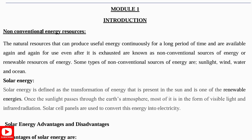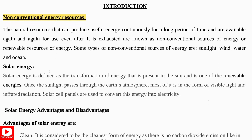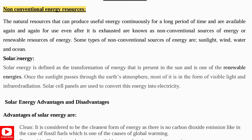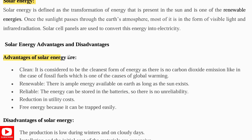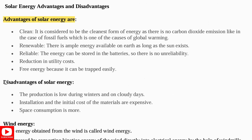Module 1 introduction: first you have to know about non-conventional energy resources — resources that can produce useful energy continuously for a long period of time and are available again and again. These are also called renewable sources of energy. An example is solar energy, which is defined as the transformation of energy present in the sun; it is one of the renewable energies present in the earth's atmosphere.